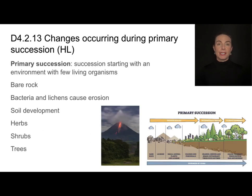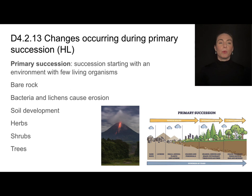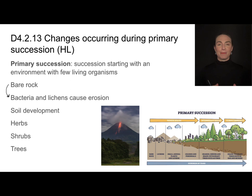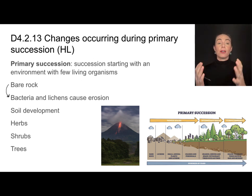First we'll talk about primary succession. This is really the beginning of ecosystem development — succession starting with an environment with very few living organisms, so we're starting from scratch. We start with bare rock, like after a lava flow that has totally wiped out an ecosystem, leaving just a blanket of igneous rock. That bare rock is then worked on by bacteria and lichens, which are generally the first organisms to come into this ecosystem. They cause soil development through the erosion process — they erode the bare rock and soil begins to form.